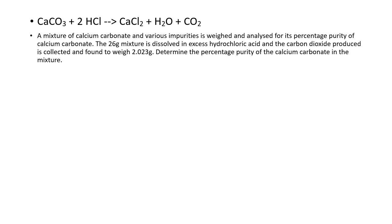We've got a balanced equation already. A mixture of calcium carbonate and various impurities is weighed and analyzed for percentage purity of the calcium carbonate. A 26-gram mixture is dissolved in excess hydrochloric acid, and the carbon dioxide produced — that's the product — was found to weigh a measured mass. Determine the percentage purity of the calcium carbonate in the mixture.